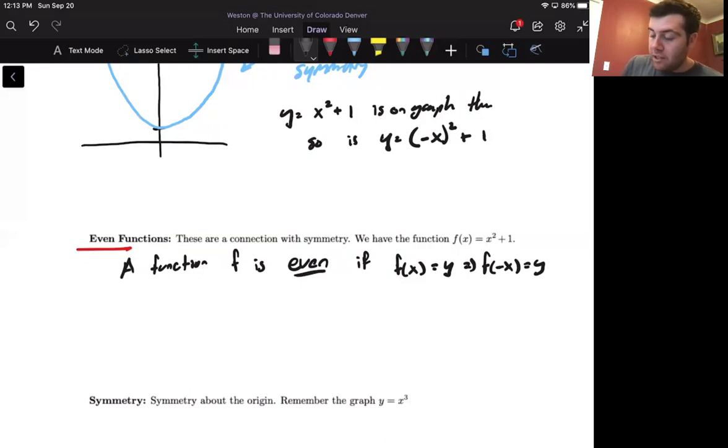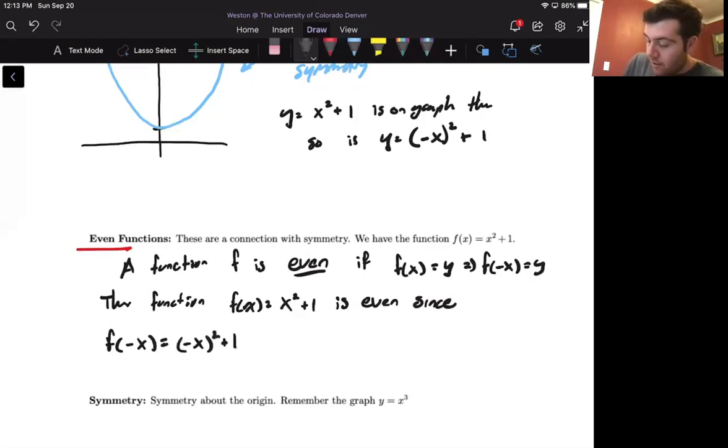We can then check that the function f of x equals x squared plus 1 is even, since f of negative x equals negative x quantity squared plus 1, which is the same as x squared plus 1, which is f of x.